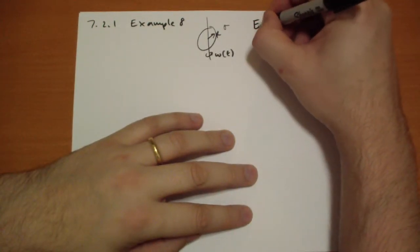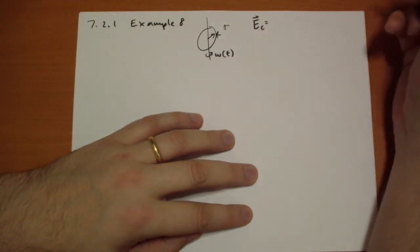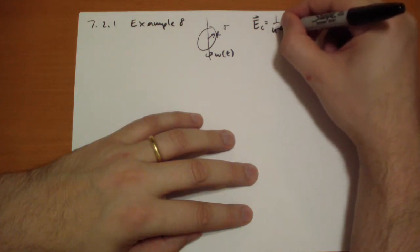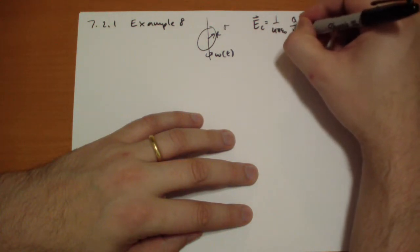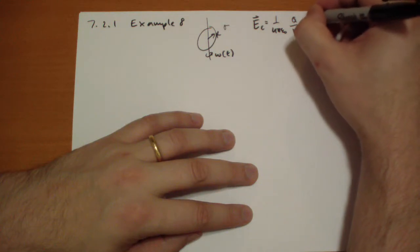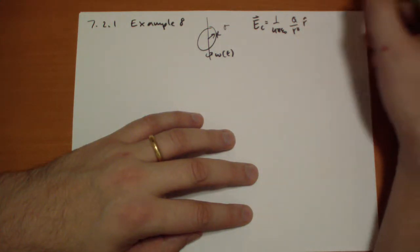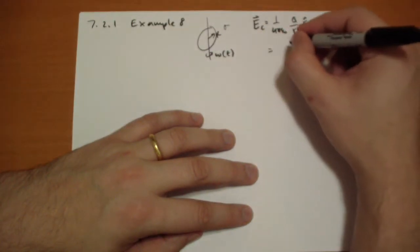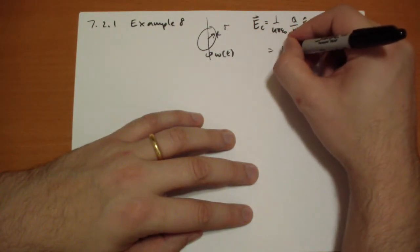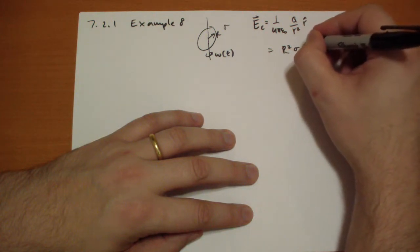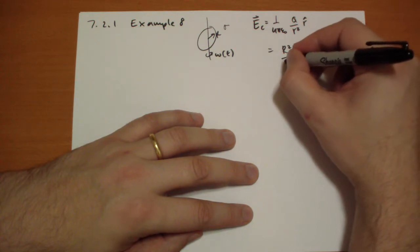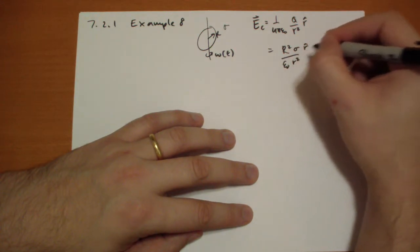So the electric field due to Coulomb's law is we calculated that as if it's a point charge of the total charge divided by r squared in the r hat direction. So that's as if there was a point charge of total charge q at the origin. Well, how much is the total charge? We get r squared sigma in the r hat direction all over epsilon naught r squared.